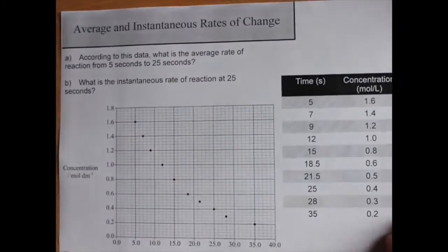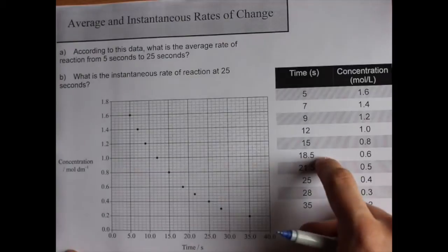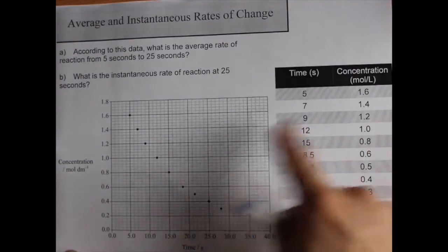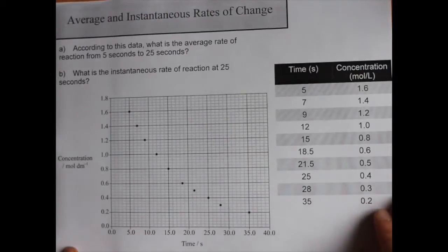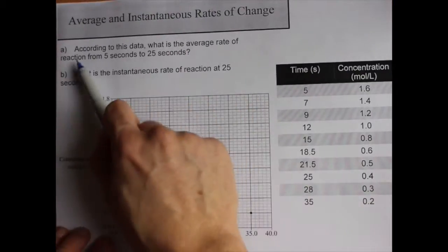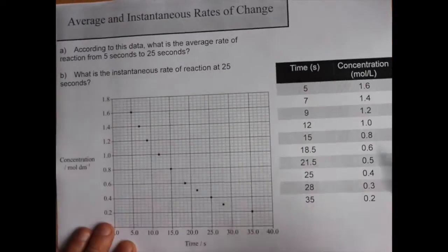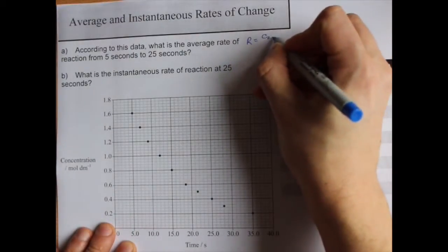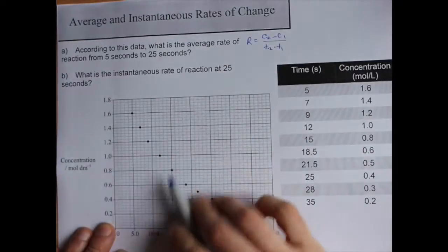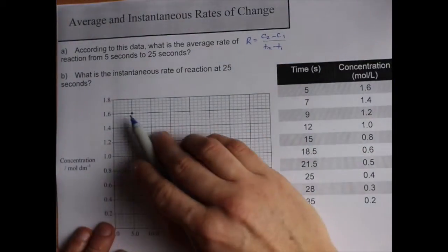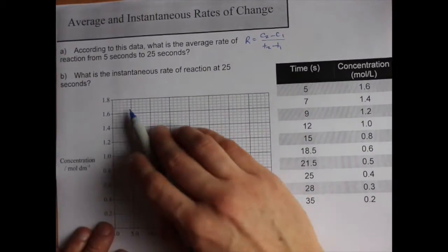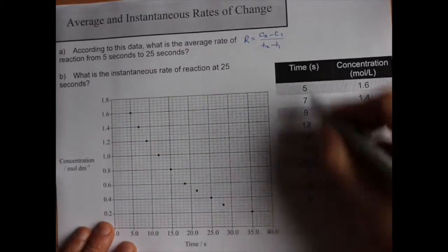Now, you can also do this from tables. And just so you know that this table I invented to correspond to this chart, which I lifted out of an old IB test. But again, the average rate of reaction from 5 seconds to 25 seconds is C2-C1 over T2-T1. Now you can pick that from 5 seconds here to 25 seconds there and draw a secant line. Or you can look at it in the chart.